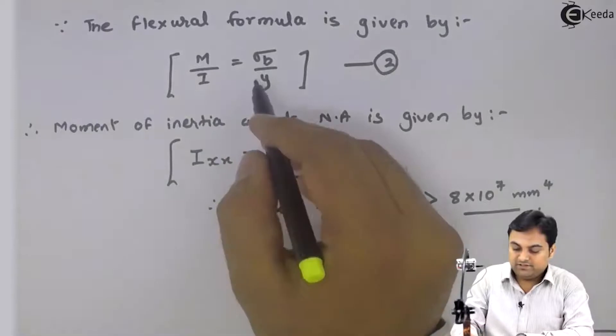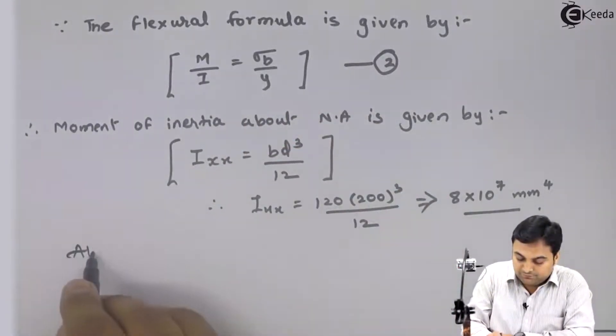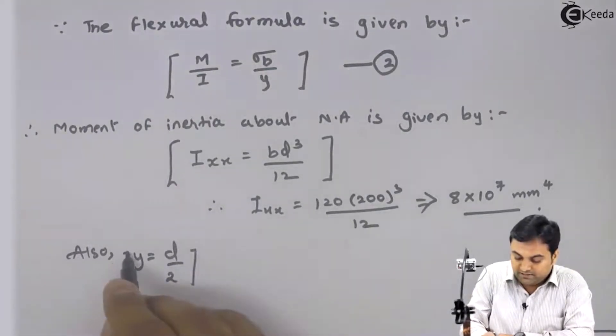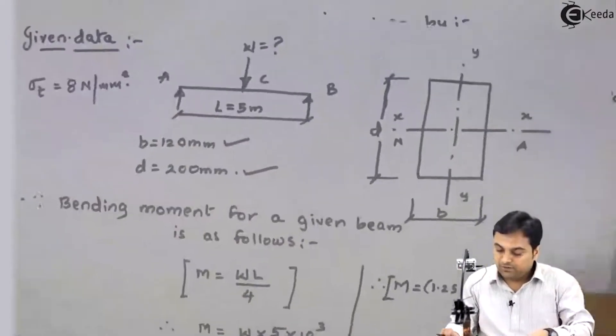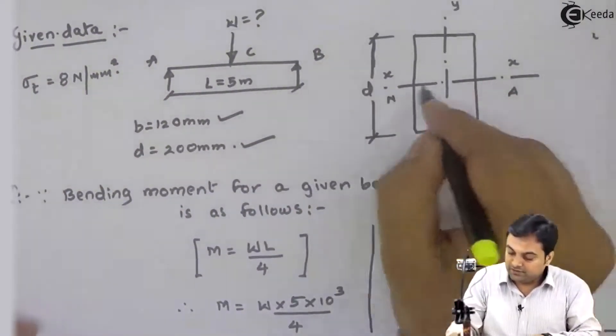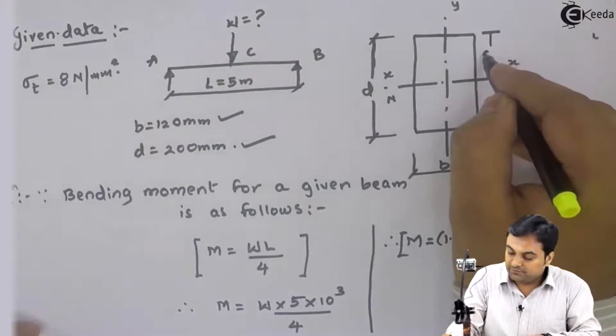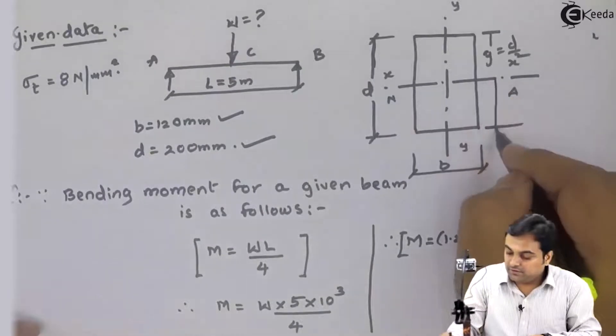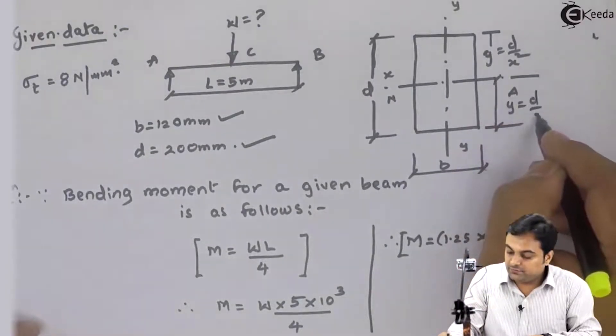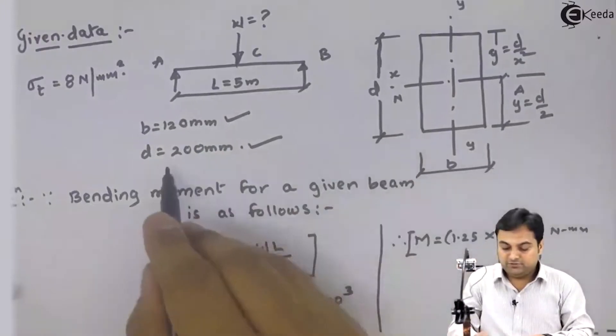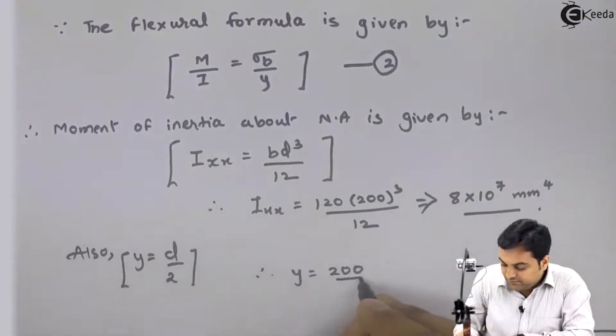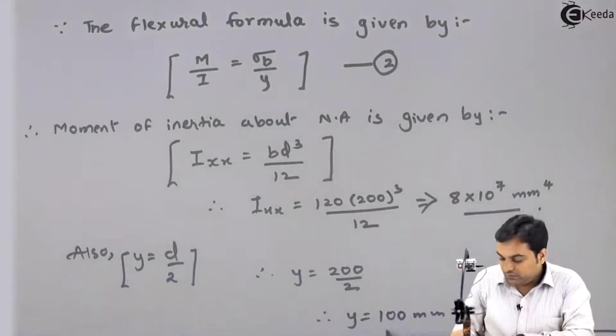Only thing left is y. Y is equal to d by 2. Y is the distance from neutral axis to the topmost fiber. So this is your y, y is equal to d by 2. And d is 200. Therefore, y is equal to 200 divided by 2. My answer comes out to be 100 mm.